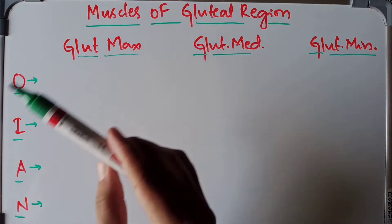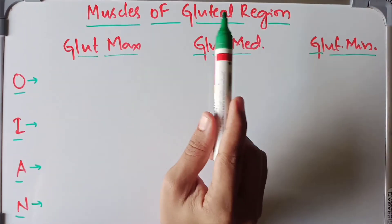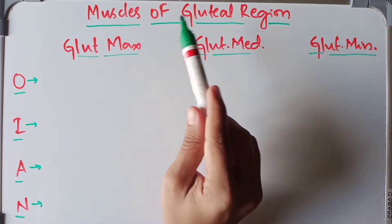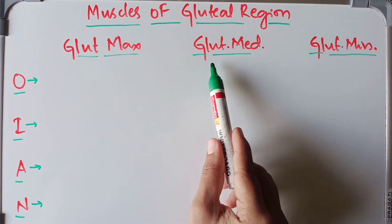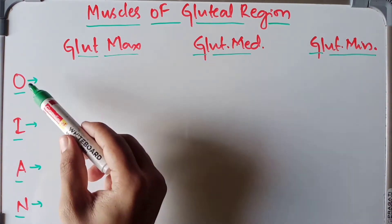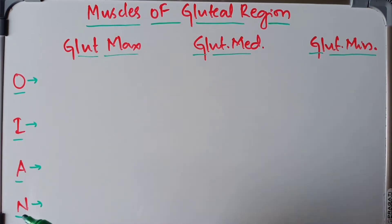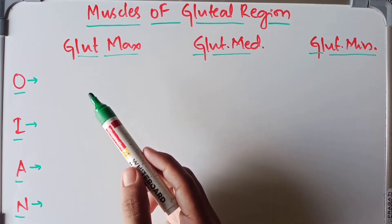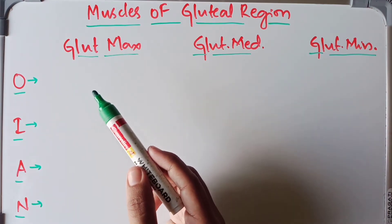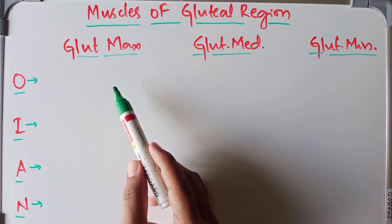Hey guys, welcome back. Today we are going to discuss the muscles of the gluteal region. We'll begin with the gluteus maximus, gluteus medius, and gluteus minimus in terms of origin, insertion, action, and nerve supply. We'll also discuss the tensor fascia latae, piriformis, gemella superior, gemella inferior, obturator internus, and quadratus femoris.